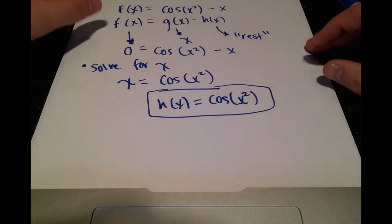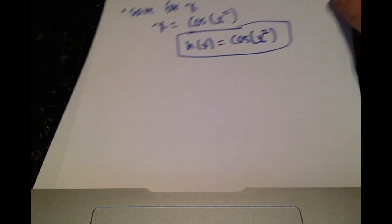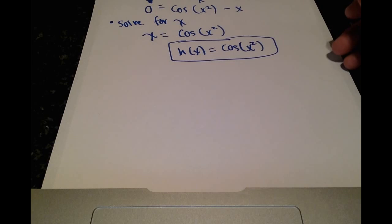Alright, and then that indicates that cosine of x squared is our h of x value. Alright, another thing I want to point out is giving the g of x and h of x values, assigning one to x is sort of arbitrary. And this is where I really want you to go back and understand what we're doing here.